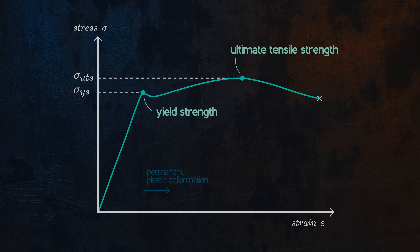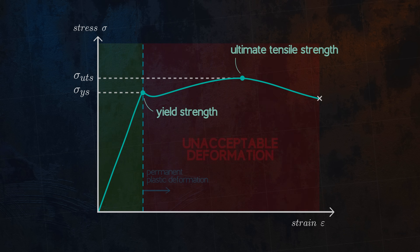Stressing a material beyond its yield strength will result in permanent deformation after the load is removed. Many structures and components are designed to ensure that they only deform elastically. This makes the yield strength a commonly used criterion for defining failure in engineering design codes.